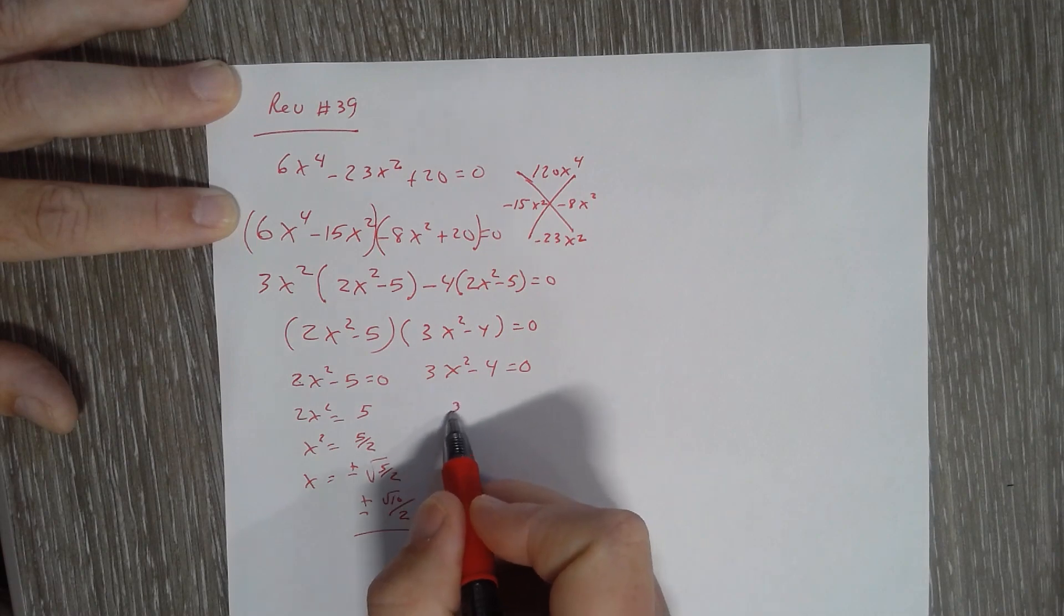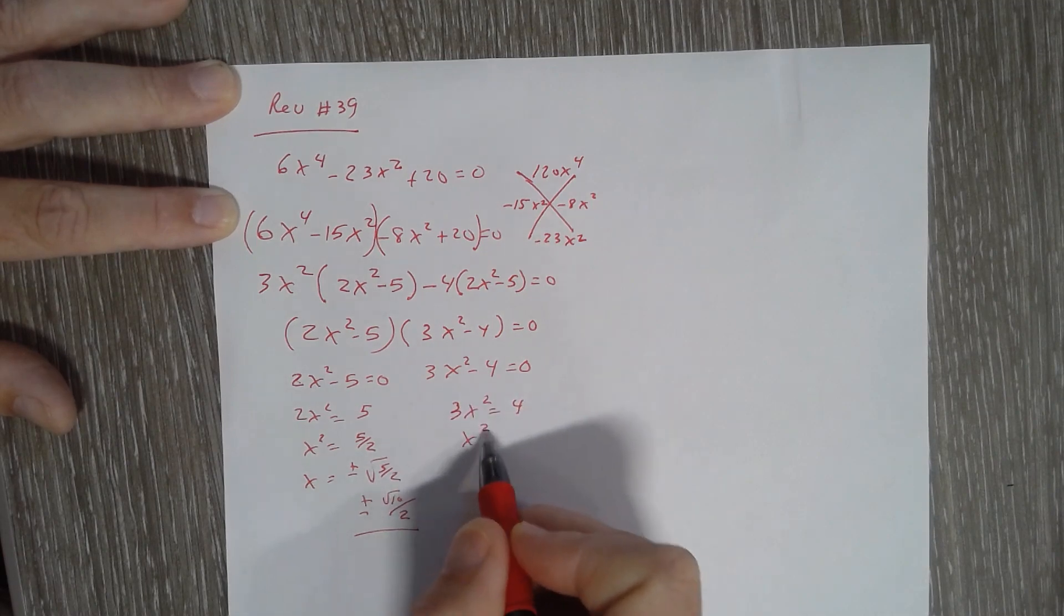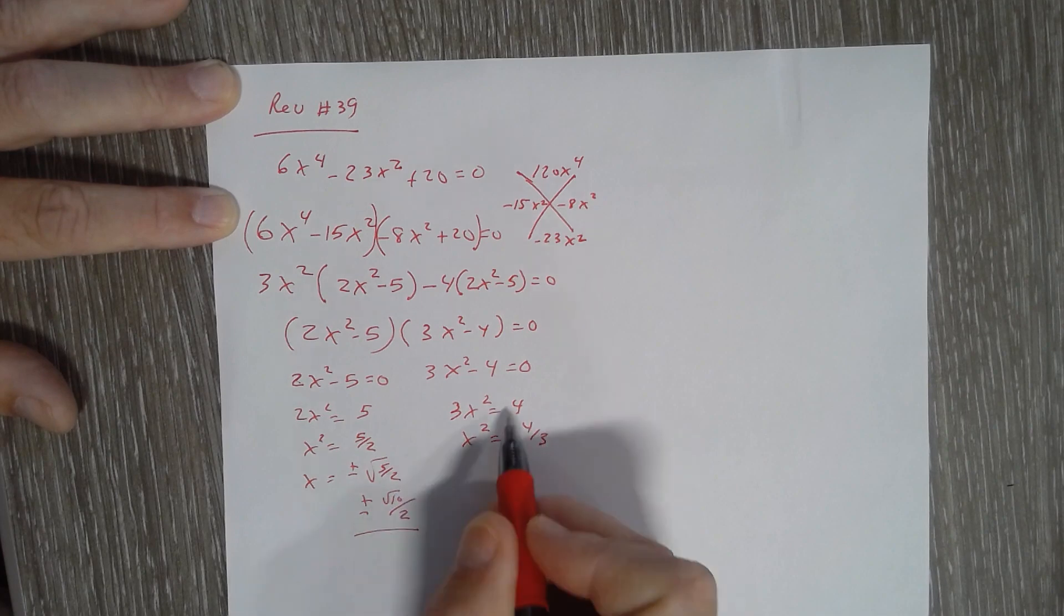Solving the other one, I get 3X squared is 4. So X squared is 4 thirds. Take the square root. I get plus or minus the square root of 4 thirds.